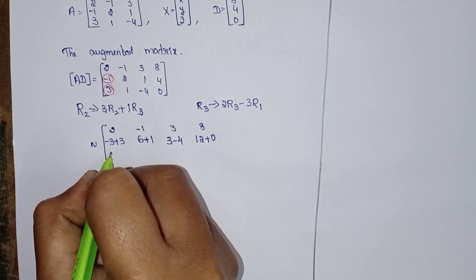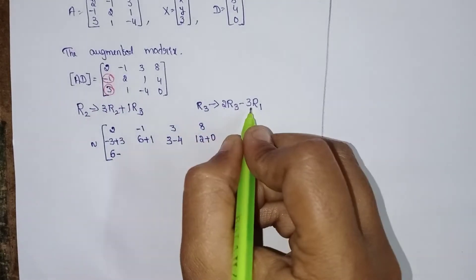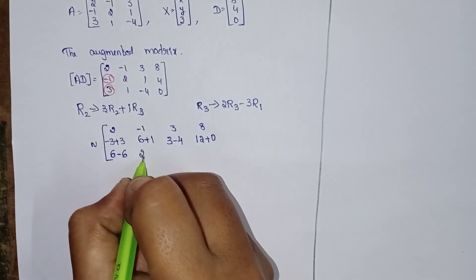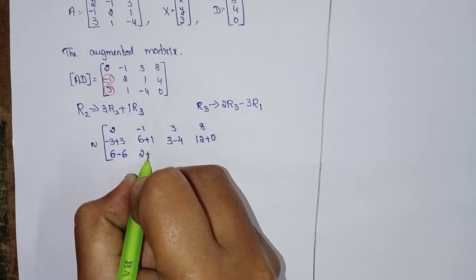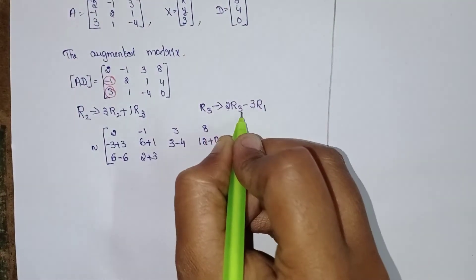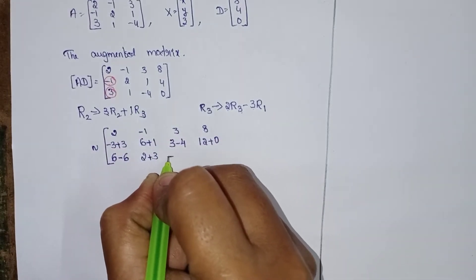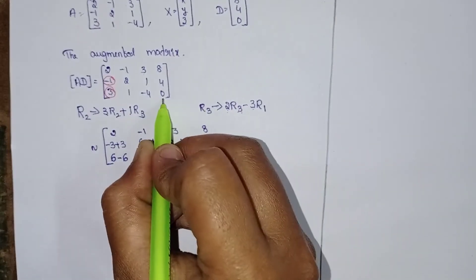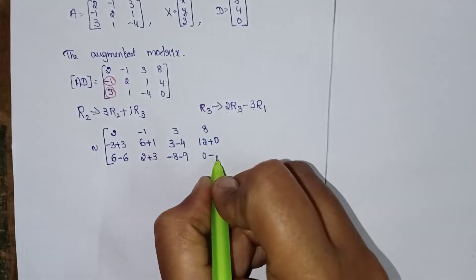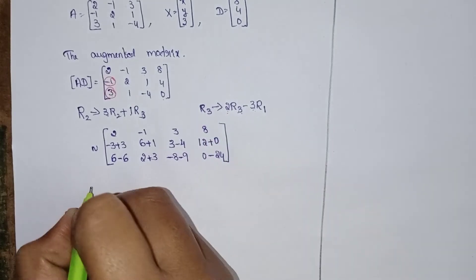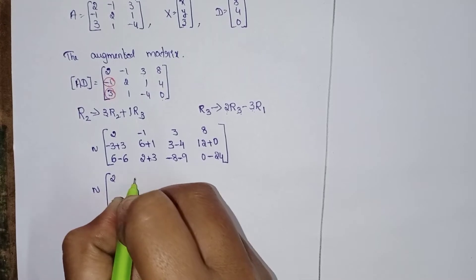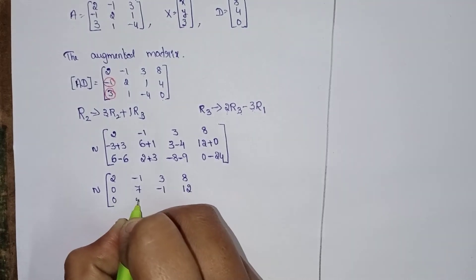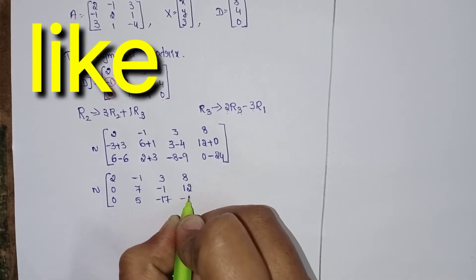For 2 times R3 minus 3 times R1: 2 threes are 6, 3 twos are 6, 2 ones are 2. 2 times R3: 2 fours are 8, minus 3 times R1: 3 threes are 9. 2 times R3: 2 into 0 is 0. Minus 3 times R1: 3 eights are 24. After simplification: row 1 is 2, minus 1, 3, 8; row 2 is 0, 7, minus 1, 12; row 3 is 0, 5, minus 17, minus 24.